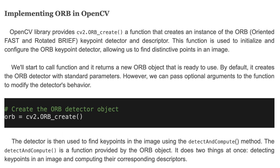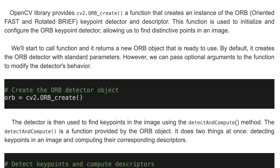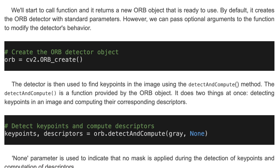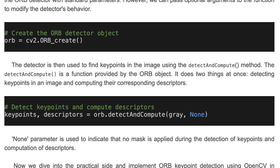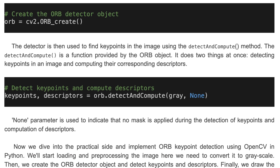This is an example of how to create an ORB detector object. The detector is then used to find keypoints in the image using the detectAndCompute method. The detectAndCompute function, provided by the ORB object, does two things at once: detecting keypoints in an image and computing their corresponding descriptors. Here is an example of how to detect keypoints and compute descriptors. The None parameter is used to indicate that no mask is applied during the detection of keypoints and the computation of descriptors.